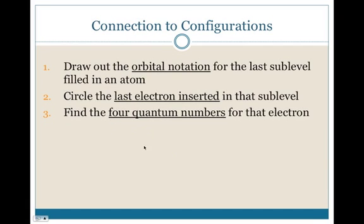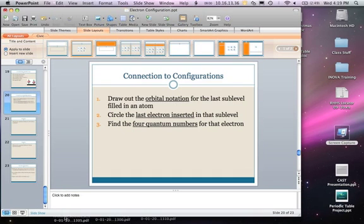So how do we connect all of this to our configurations? You draw out the orbital notation for the last sublevel filled. You don't have to draw out the orbital notation for all of it, thank goodness, because that would take forever. Then if I'm asking you specifically for the last electron, circle that last electron and then find the four quantum numbers for that electron. If I'm asking you for a different electron, then circle that electron and find the four quantum numbers for it. And I'm going to take a break for a second and make sure that my video is not getting too long. No, we're doing good.